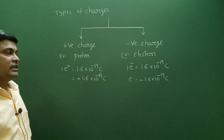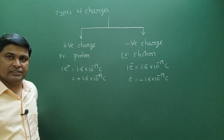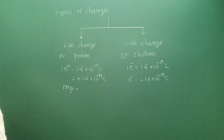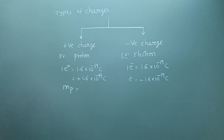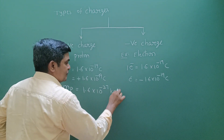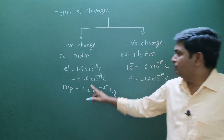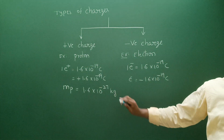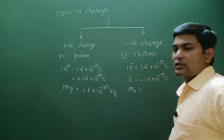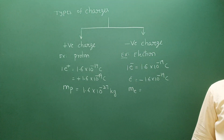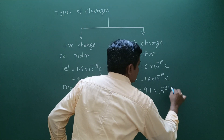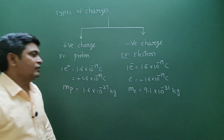Other important information to remember about charges: the mass of the proton is 1.6 × 10⁻²⁷ kg, and the mass of the electron is 9.1 × 10⁻³¹ kg.